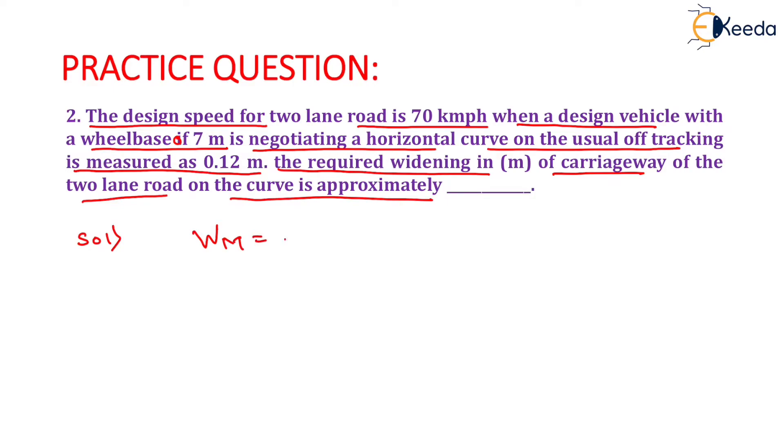So we will write it as Wm equals to L squared upon 2R. Now, the value of mechanical widening is given as 0.12 and the value of length of vehicle is given as 7 squared upon 2R. From this we will calculate the value of R equals to 204.167 meters. That will be the value of R.